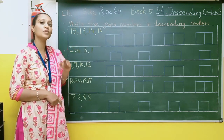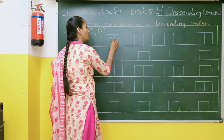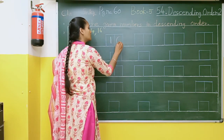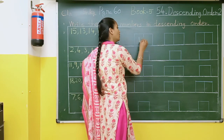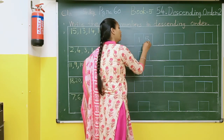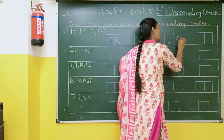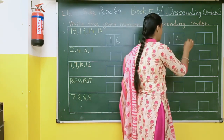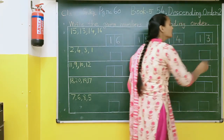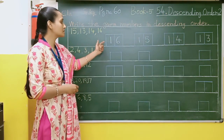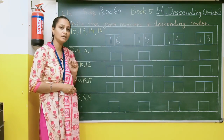Okay students? So in this way we have to arrange it. We write 16, then 1 digit smaller is 15, then 1 digit again smaller is 14, and then again 1 digit smaller is 13. So: 16, 15, 14, and 13.